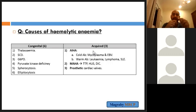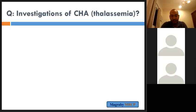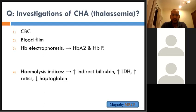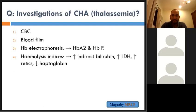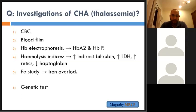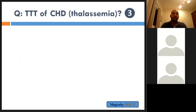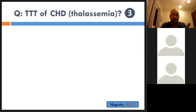Investigations of chronic haemolytic anaemia or thalassaemia: CBC, blood film, haemoglobin electrophoresis to identify the abnormal fraction, haemolytic indices (anaemia, indirect hyperbilirubinaemia, elevated reticulocytes, elevated LDH, low haptoglobin), iron studies, and genetic testing.